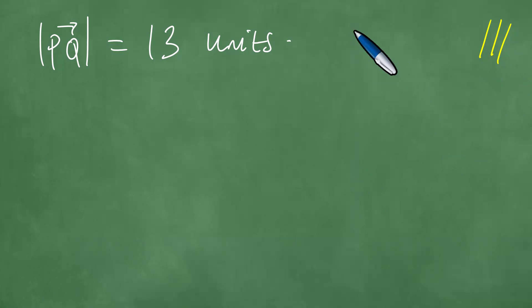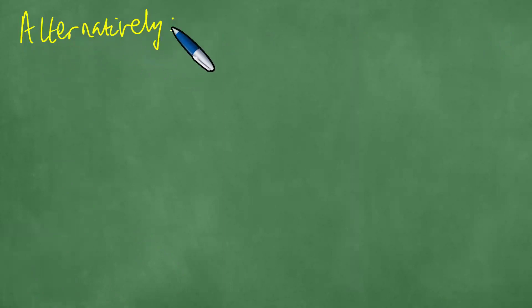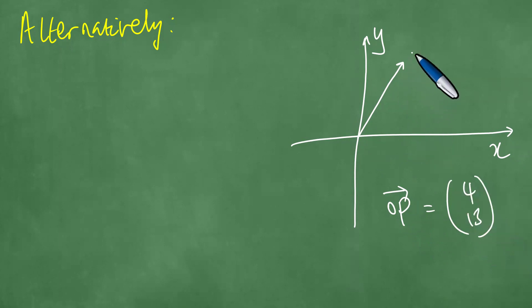There are schools of thought here. There's an alternative solution to this. Alternatively, if one has the same Cartesian plane with Y and X axes, we have the position vector OP, which is exactly 4 and 13. So the point P has the coordinates 4 and 13. We have here the point Q with the coordinates 16 and 8. This is the origin.